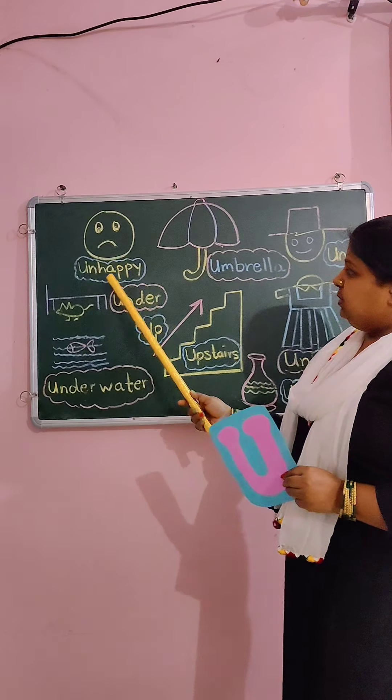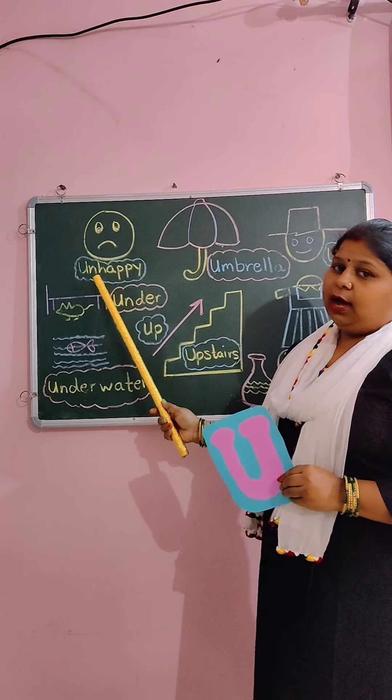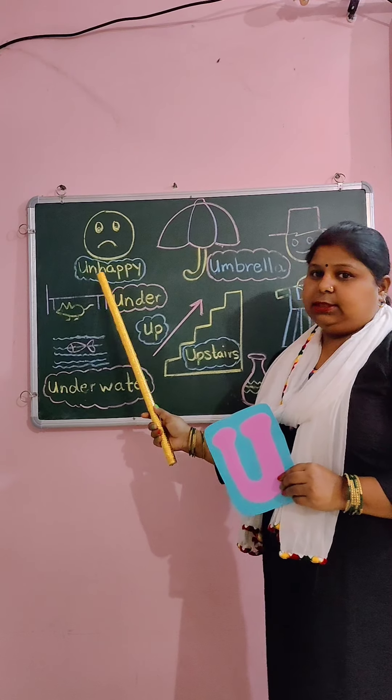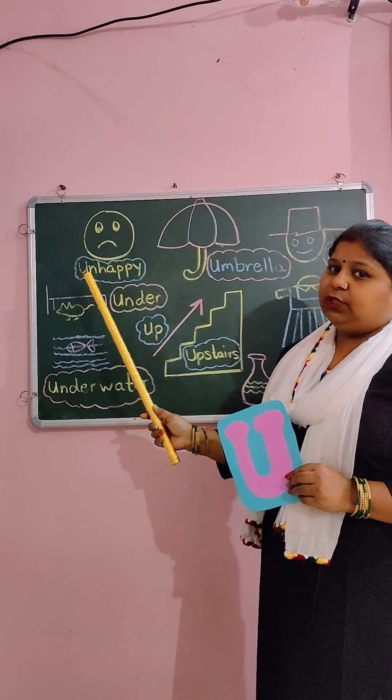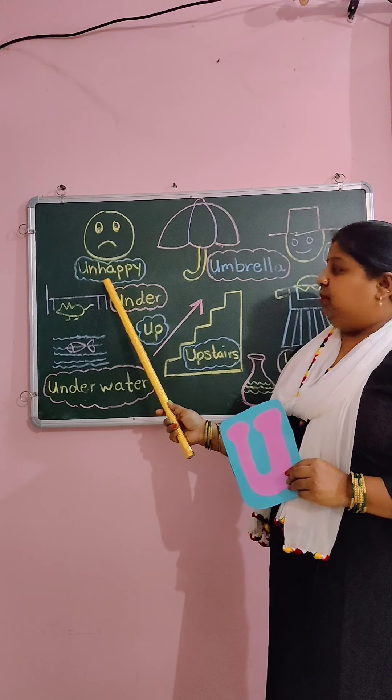First picture is U for unhappy. Unhappy means udaas. Jab hum khush nahi hoote hai, that is unhappy.